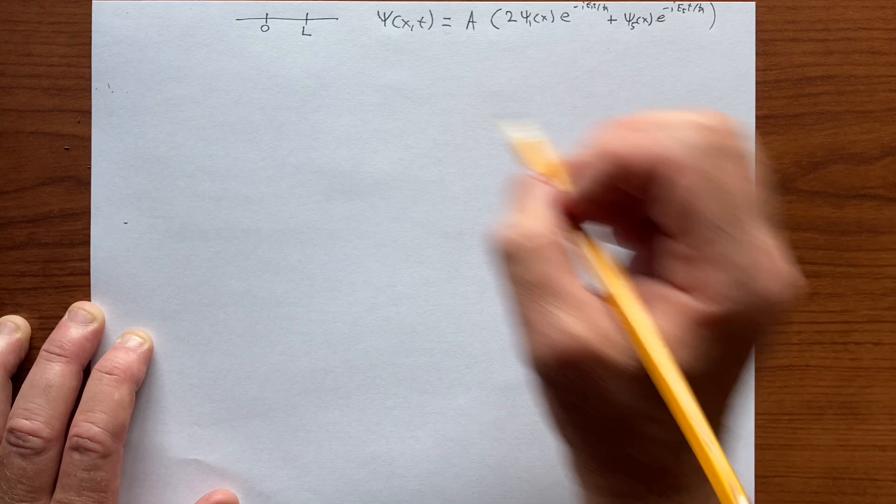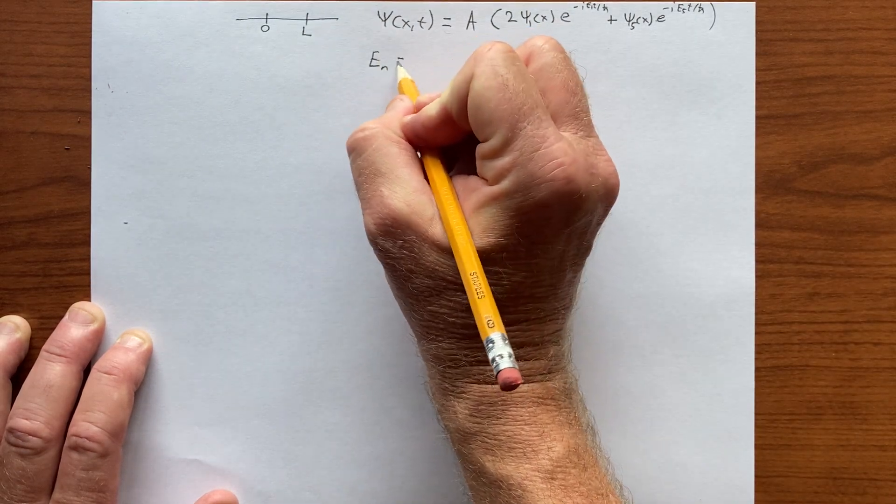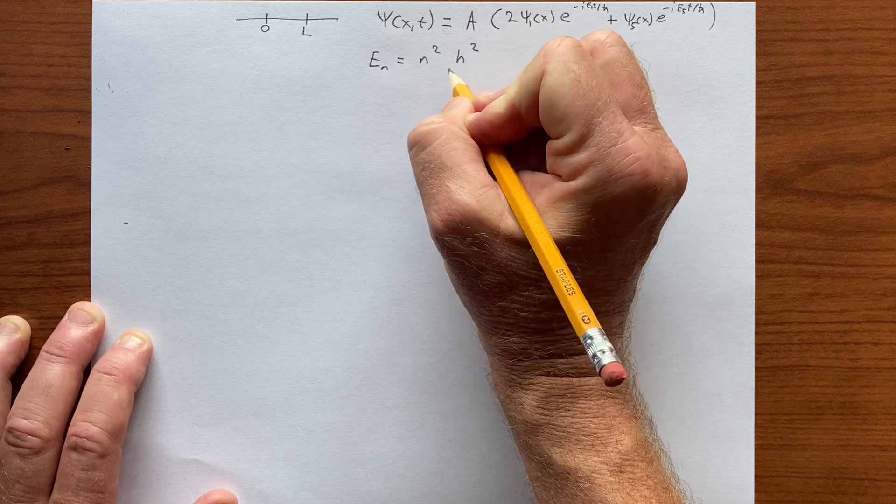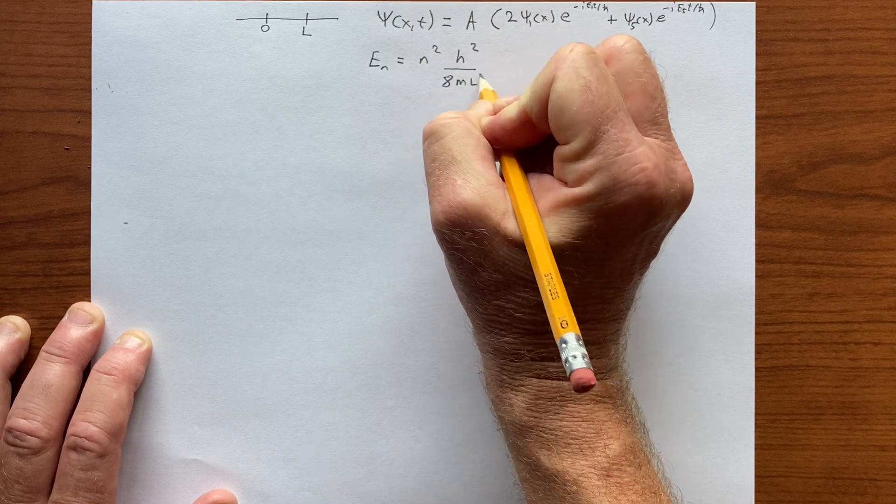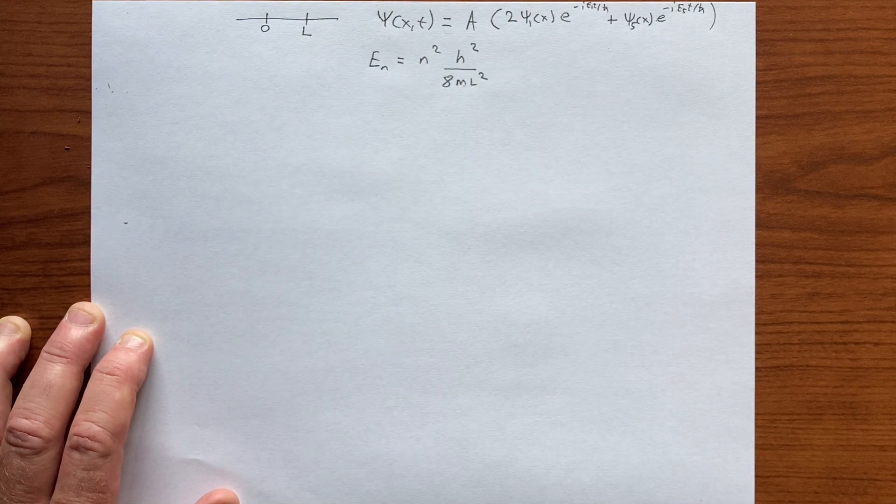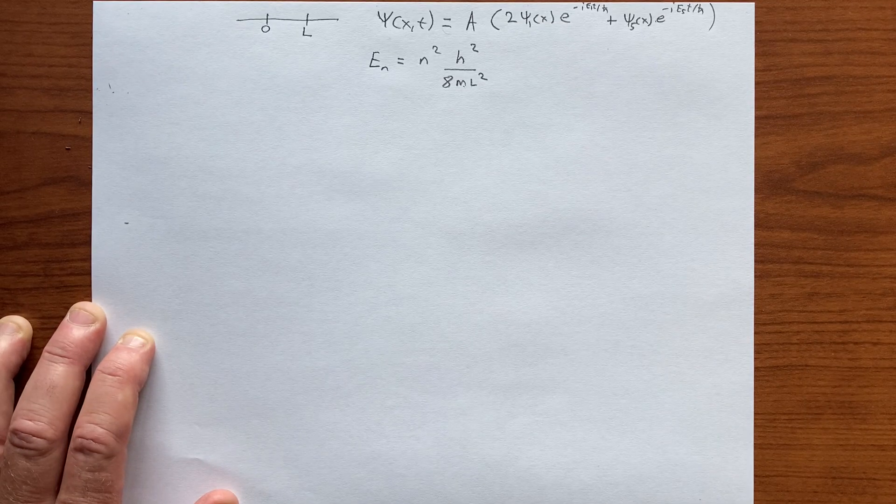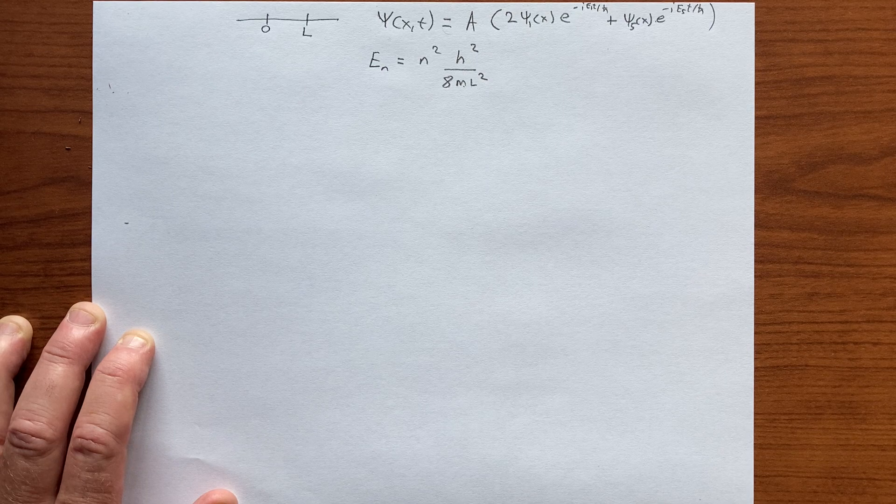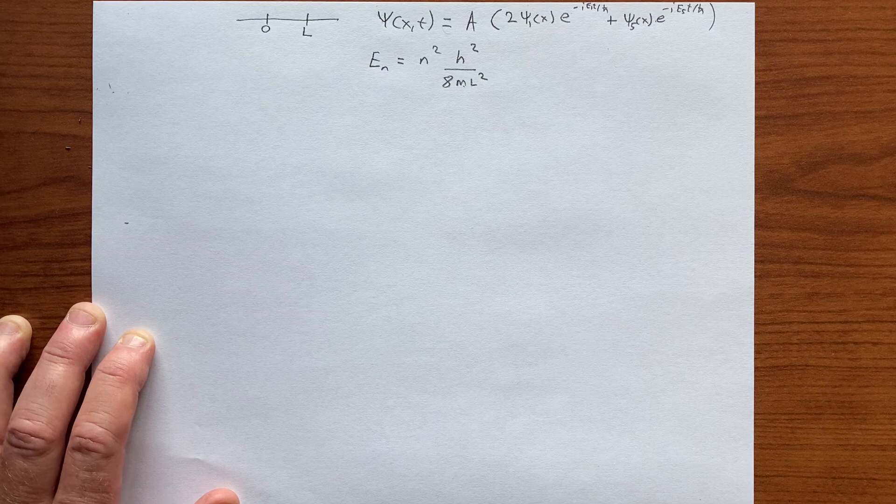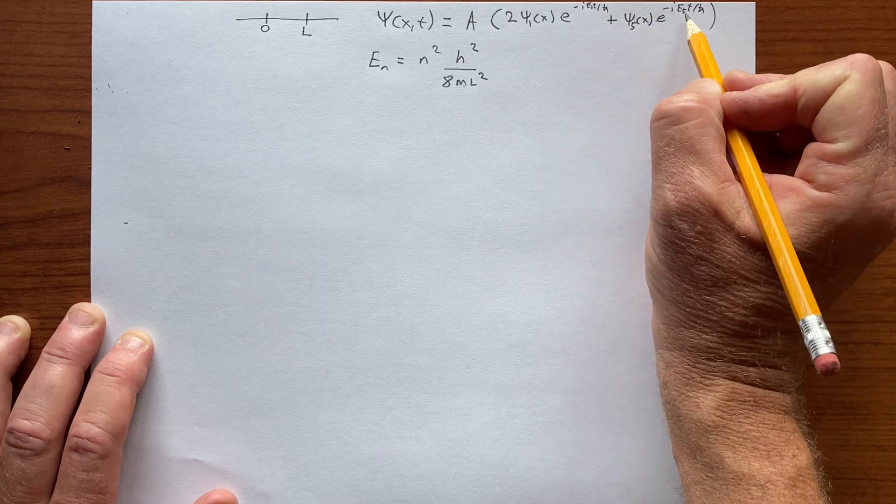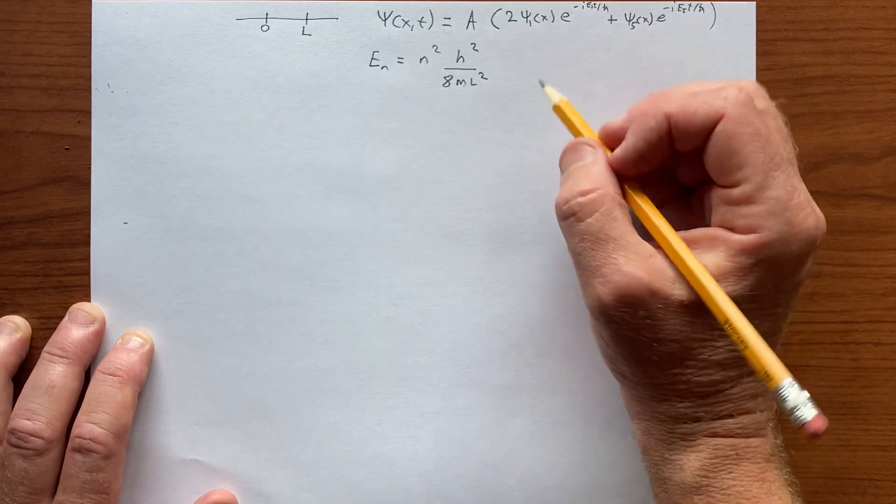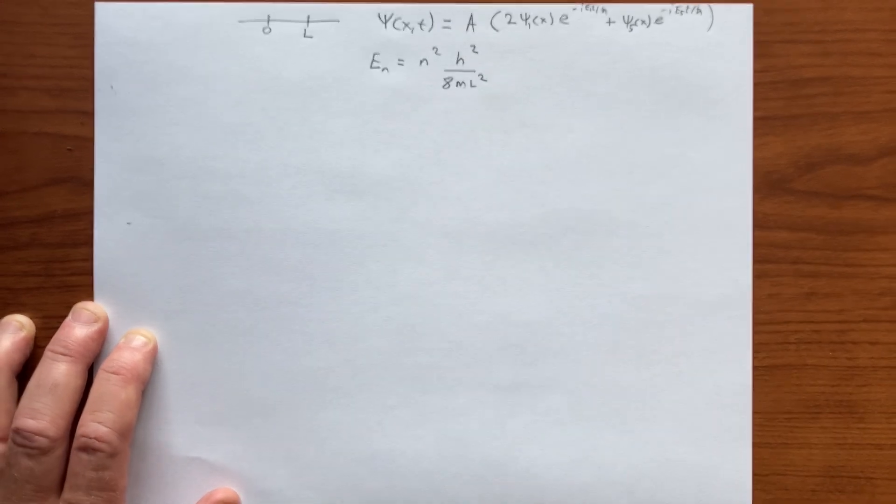Where, of course, En is the usual n squared h squared over 8m L squared. This is the mass, and that's the length of the well. Let's think about the expectation value of energy and the probability of measuring different values of energy. In this case, E1 or E5, of course, zero probability of measuring any other value of energy.